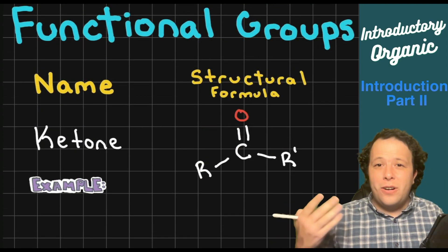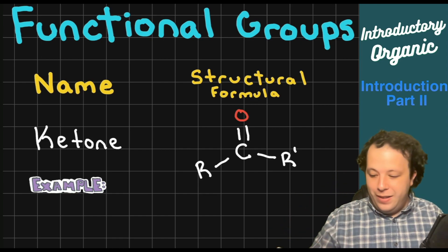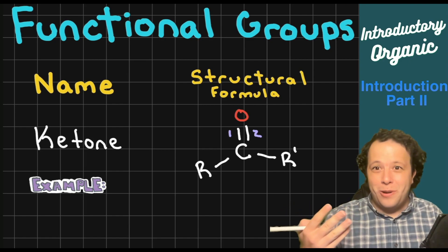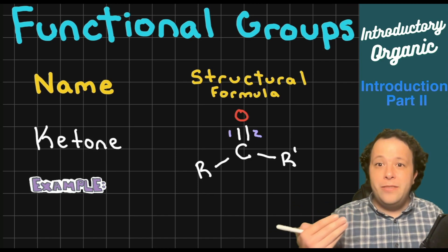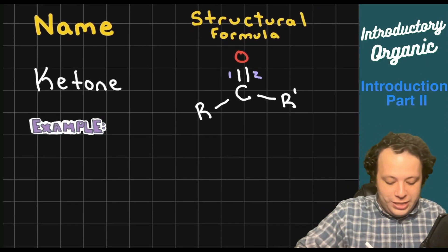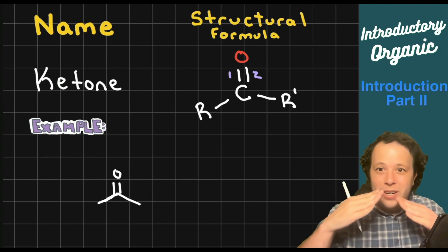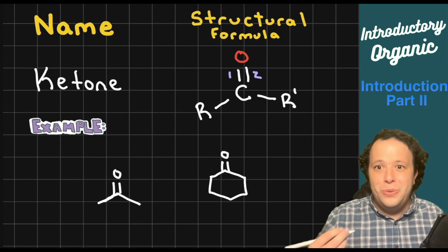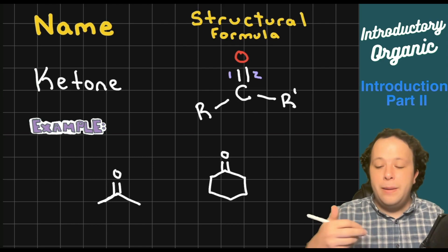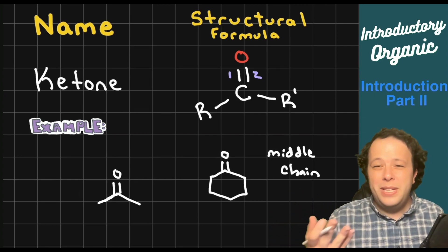Ketones are the first species with a carbon double-bonded to an oxygen (C=O). Oxygen needs two bonds, and the double bond fulfills that requirement. You'll always see that C=O with a vertical point in the middle showing a carbon, and they can appear on ring or cyclic compounds too. Importantly, ketones are always in the middle of a chain — think of it as the key to the whole chain.